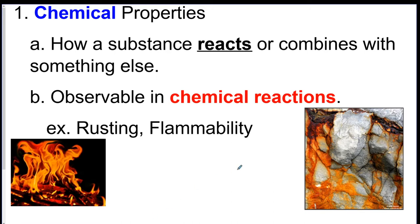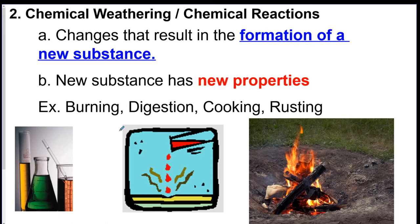One of the main forms of chemical weathering we're going to talk about is rusting. You've probably heard of it — that's a chemical reaction. Rust is no longer the actual original material. If your bike starts to rust, that piece of rust is no longer the aluminum frame; the metal turned into rust through a chemical reaction. The big thing here is it creates a new substance with its own new properties — completely different from the original.